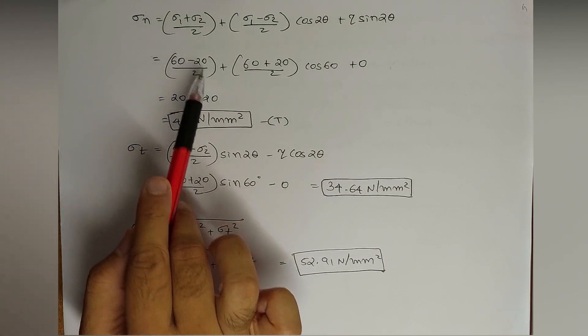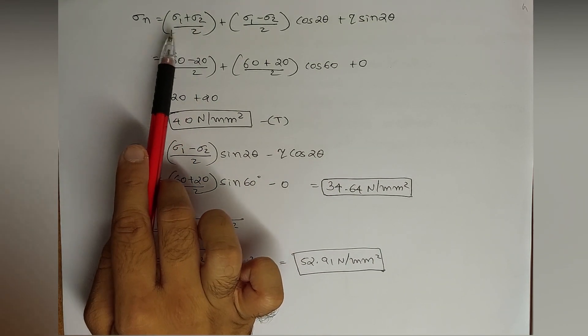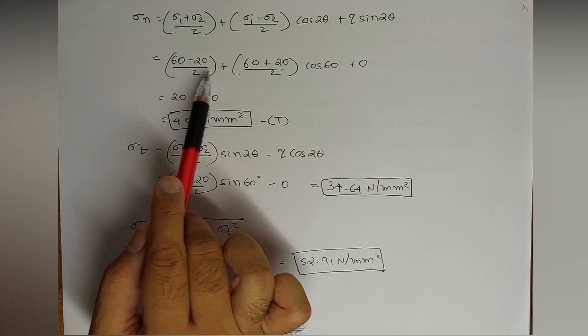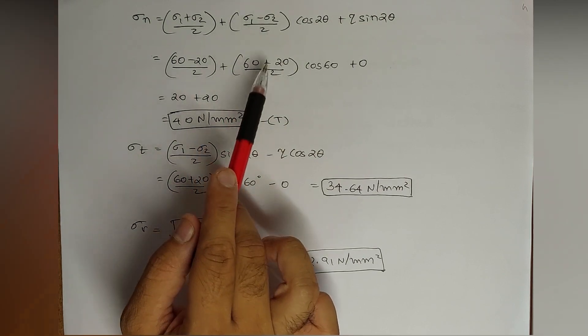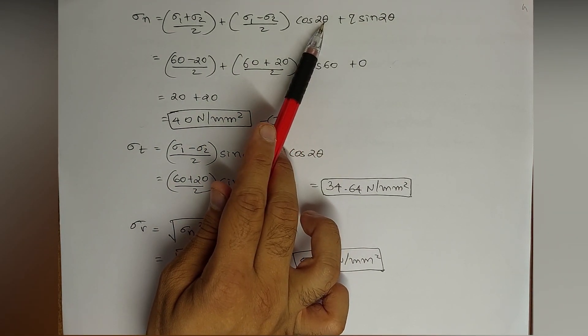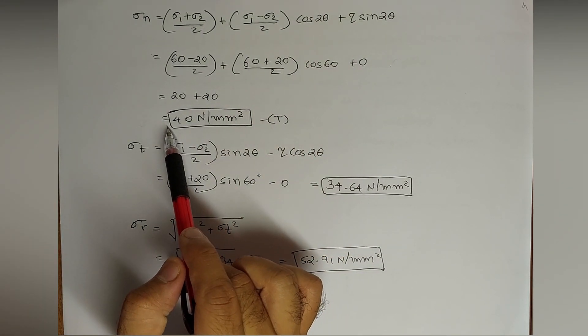60 minus 20, sigma 1 minus sigma 2, this is minus 20, so I have written minus, or we can write 60 plus minus 20 by 2, plus sigma 1 minus sigma 2, this 60 plus 20 by 2 cos 60, because the value of theta is 30 as given in the question. Cos 60, so the answer is 40 Newton per mm square.